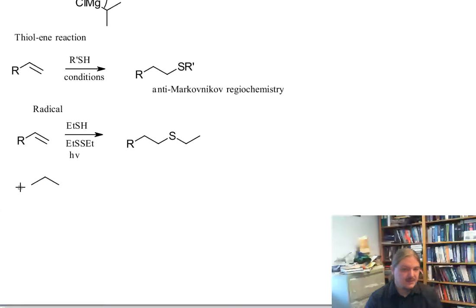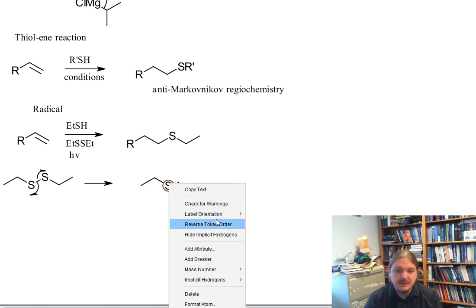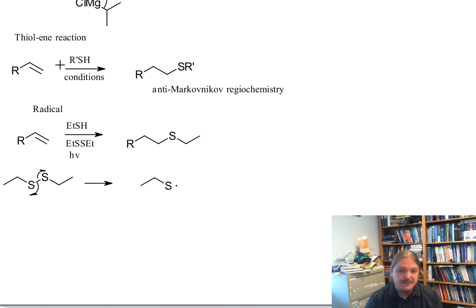And this reaction, the mechanism of this reaction features homolytic cleavage of the sulfur-sulfur bond. Draw some radical arrows. To make a sulfur radicals. All right. There we go. Make a sulfur radical.